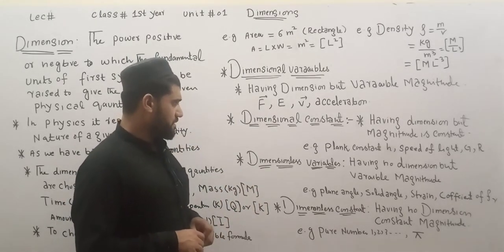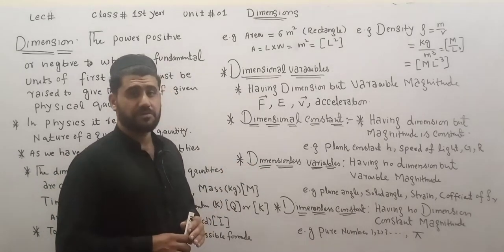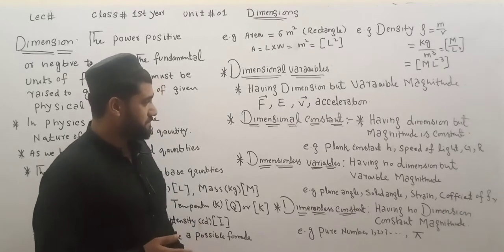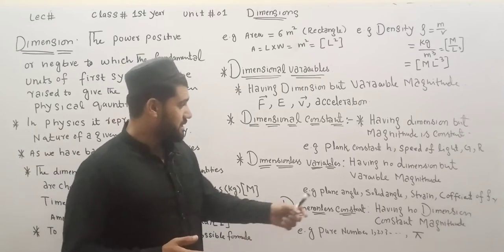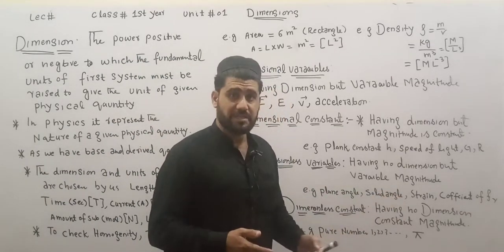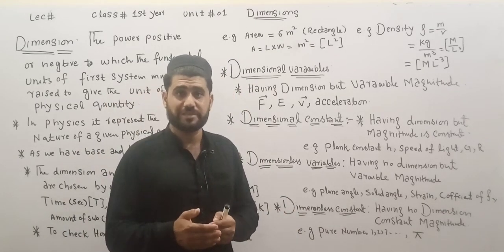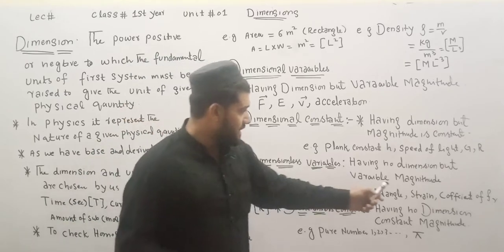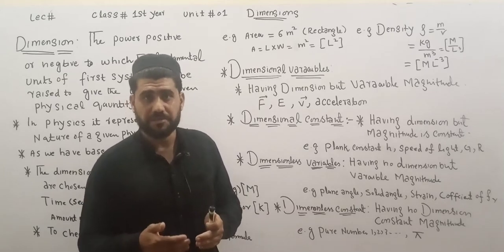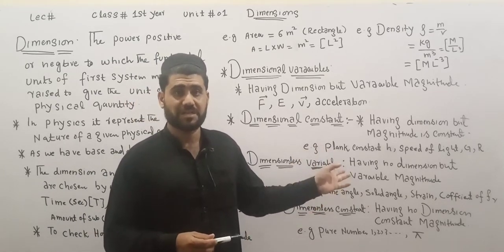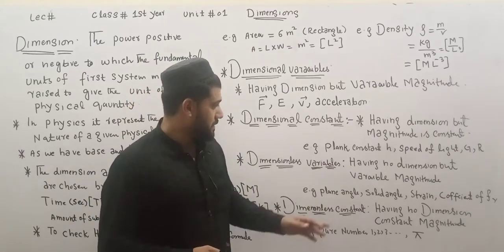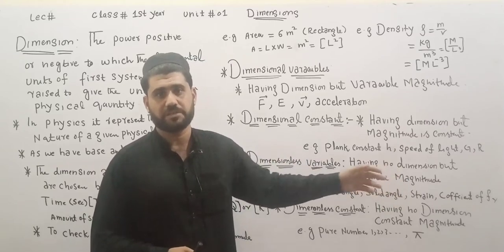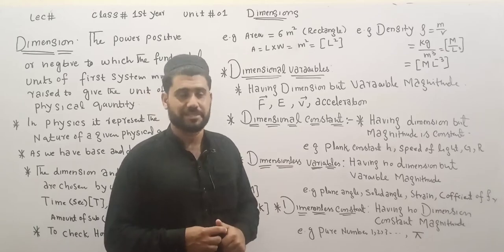We have a dimensional variable and a dimensionless variable. If you look at the dimension, you can change the value and the magnitude. For example, a plane angle is measured in radians. The strain is the change in length with respect to the original length — it is dimensionless. The coefficient of correction is also dimensionless. The strain is a ratio of length to length — a single quantity ratio.